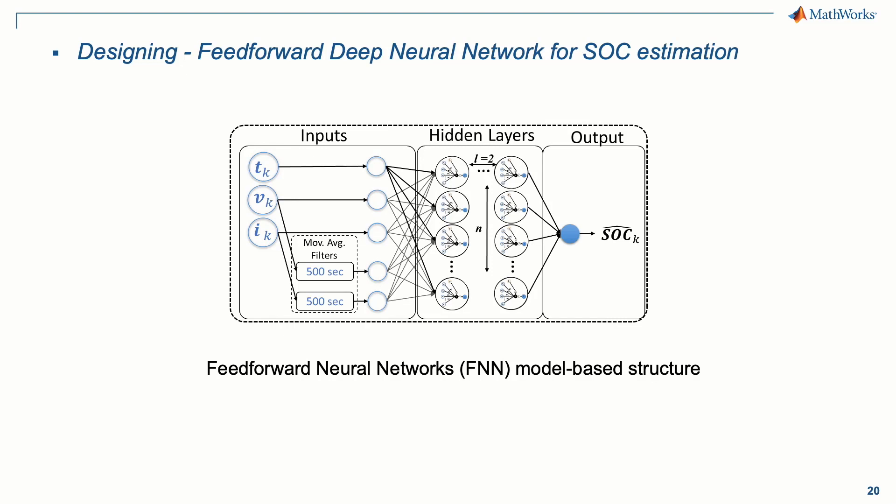The inputs for this FNN are the temperature, voltage, and current from the battery. A very important aspect I would like to highlight is the moving average filters. Unlike recurrent neural networks, FNN doesn't consider past information to help make its estimation. Just for comparison, without the filter, the estimation error is three to five times higher. In the next slide, we'll show how we selected the number of neurons for the hidden layers.